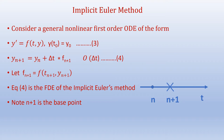We will also review the implicit Euler method. For a general non-linear first-order ODE y' = f(t, y) with y(t₀) = y₀, the implicit Euler method gives: y_{n+1} = y_n + Δt · f_{n+1}, which is also of order Δt, where f_{n+1} = f(t_{n+1}, y_{n+1}). This is the finite difference equation of the implicit Euler method, where n+1 is the base point.